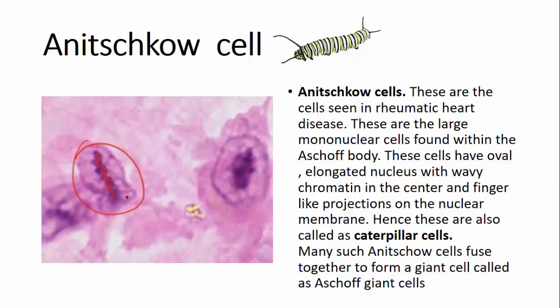Aschoff bodies are located in the interstitial tissues of the heart — the myocardium, endocardium, and sometimes the pericardium. Anitschkow cells have an oval elongated nucleus with wavy chromatin in the center and finger-like projections on the nuclear membrane, which is why they are called caterpillar cells. Many such Anitschkow cells fuse together to form an Aschoff giant cell. This is a characteristic feature of rheumatic heart disease.